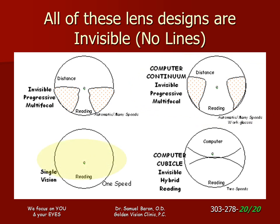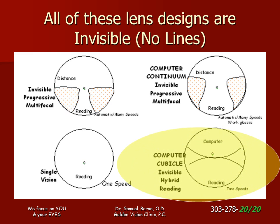Single vision lenses may work if all of your near visual tasks are at one distance. Computer cubicle lenses give you both computing and reading vision with a wider area to see them.